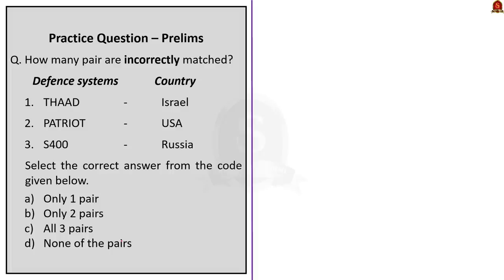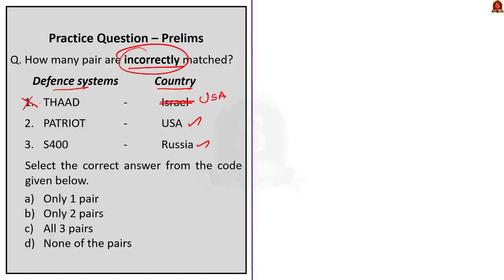Moving on to the third question — a pair-based question about air defense systems and their country of origin. From our discussion, we know that Patriot originated in the USA, so the second pair is correct. S-400 is from Russia, so the third pair is also correct. The first pair is wrong — the third defense system mentioned is not from Israel but from the USA. Since they are asking for incorrectly matched pairs, only one pair is incorrectly matched, making the correct answer Option A — only one pair.